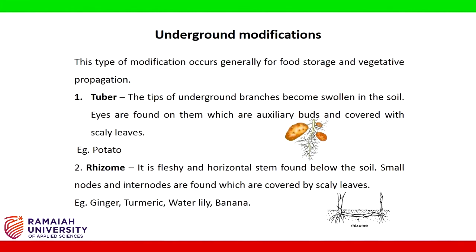Rhizome: it is a fleshy and horizontal stem found below the soil. Small nodes and internodes are found, which are covered by scaly leaves. Examples: ginger, turmeric, water lily, banana.